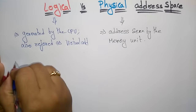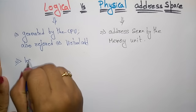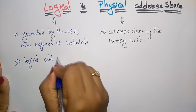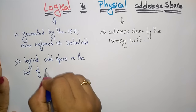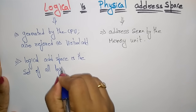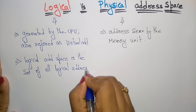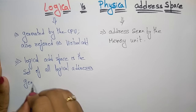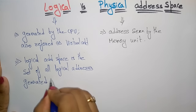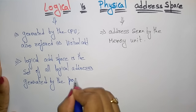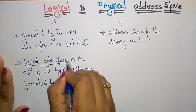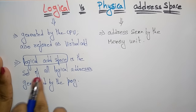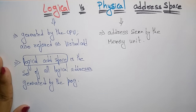The logical address space is a set of all logical addresses generated by the program. Whatever program you have written, that program consists of a set of all logical addresses, and that is what you call the logical address space.